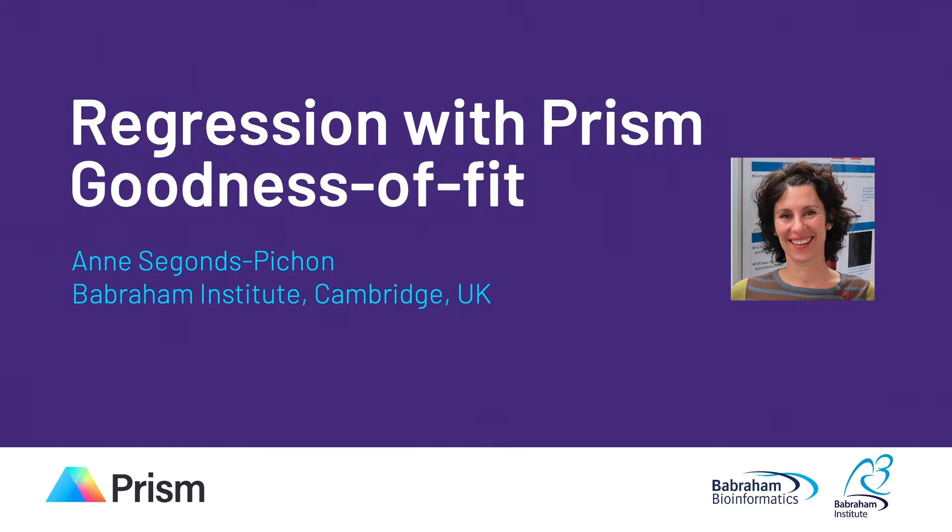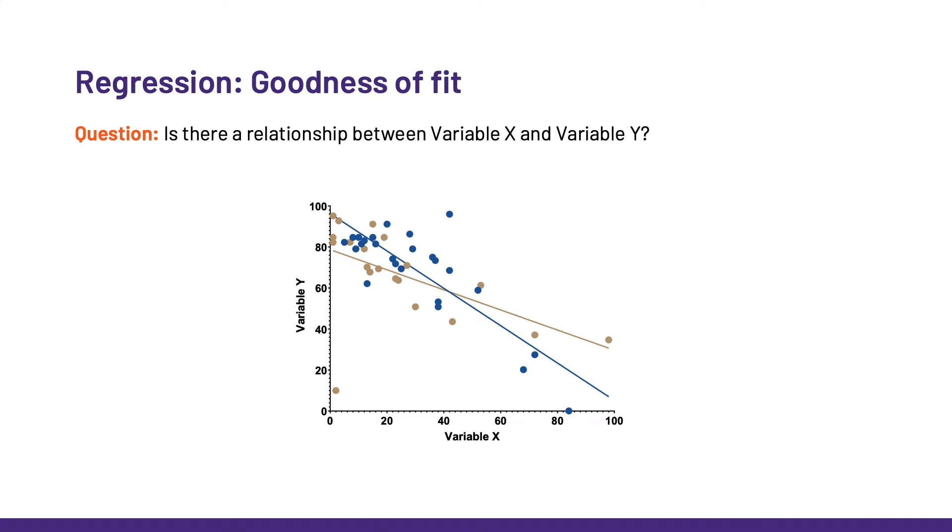It's about quantifying the trust we have in the model we are building. I present here goodness of fit in the context of regression, but really the reasoning is the same for other statistical tests. In a nutshell, goodness of fit is about how well the model we chose for our data fits. Like here, for instance, we want to know if there is a relationship between X and Y, so we add a line of best fit and then we wonder—or should be wondering—if it is the right summary.